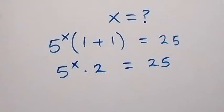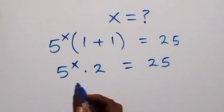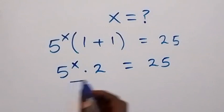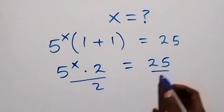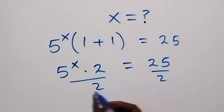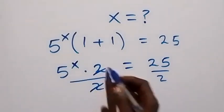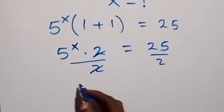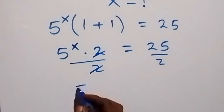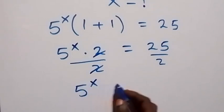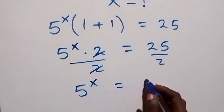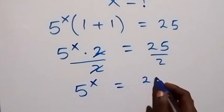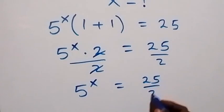From here we can divide both sides by 2 — divide this side also by 2. The 2's cancel each other, then we have 5 raised to power x equals 25 over 2.